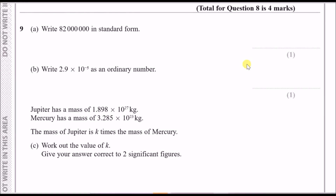Number nine: write 82 million in standard form. The easiest way is to put an arrow on the very first digit, which is 8, then write a point and copy out every non-zero digit — the only other non-zero digit is 2, giving 8.2. Then write × 10 to the power of something: count the digits after the 8 — three zeros, another three zeros, and a 2 — that's seven digits.